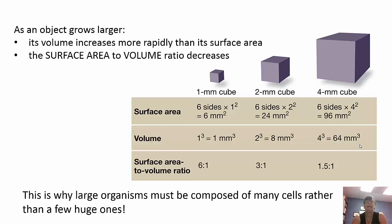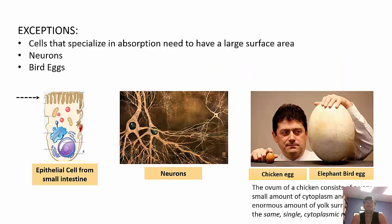This is why large organisms must be multicellular rather than having a few really big cells. Exceptions exist: cells specializing in absorption need large surface area, like the small intestine where 90% of absorption occurs. Neurons are nerve cells that allow the brain to communicate with the body. Bird eggs — the ovum of a chicken — have a small amount of cytoplasm surrounded by a large amount of yolk, all within a single cytoplasmic membrane.